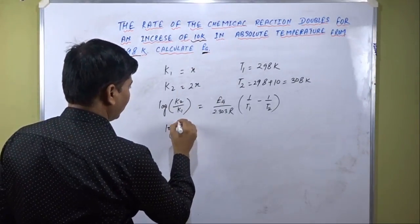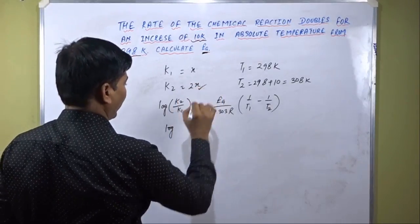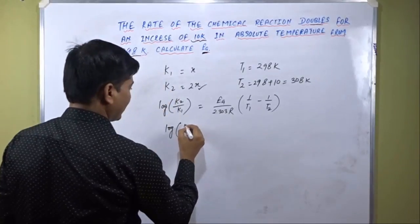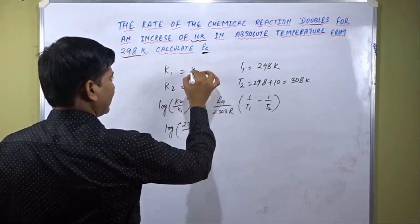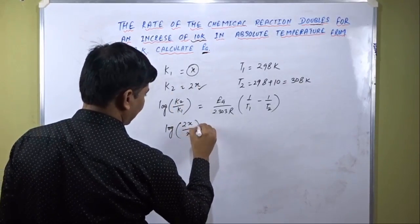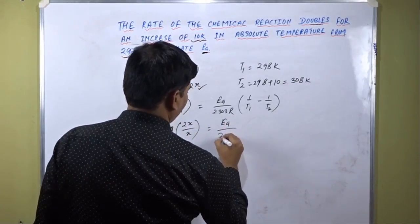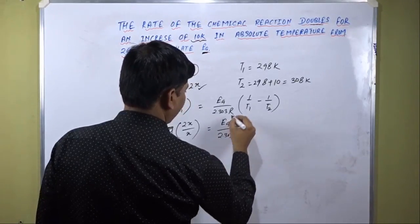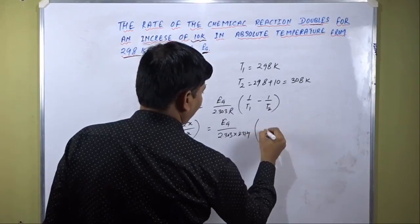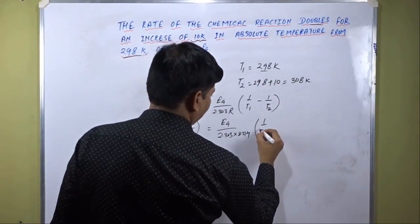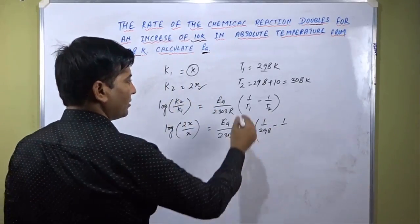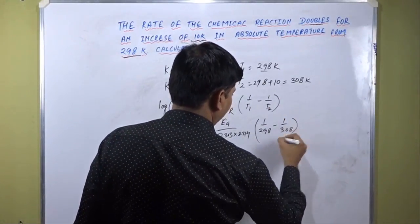Let's go ahead. The value of k2 is 2x since the initial amount doubles, so log(2x / x). The initial rate constant is x. This equals Ea divided by 2.303, R value is 8.314, multiplied by (1/T1 minus 1/T2). T1 is 298K, the initial temperature, and T2, the final temperature, is 308K.